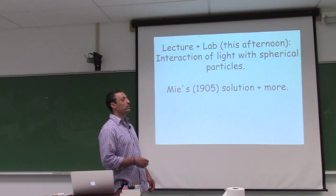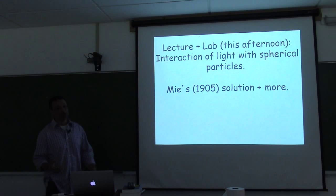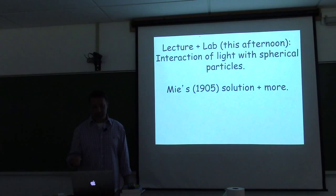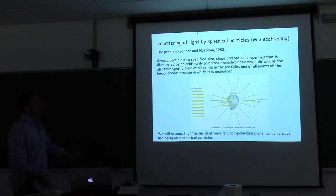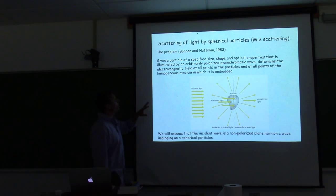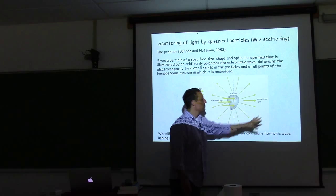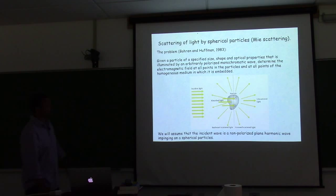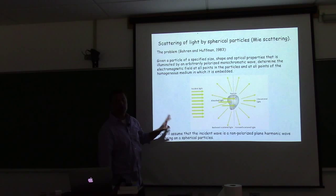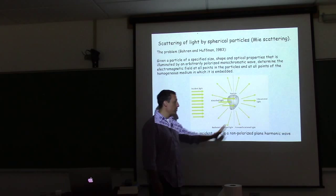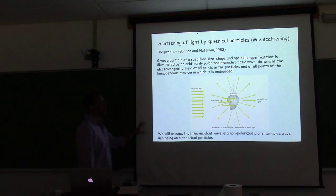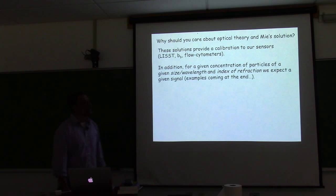Every year I wonder whether or not we should go through this painful process, and I hope to convince you that we should, but it resonates with some more than with others. The problem at hand is as follows: you have a particle with specific size, shape, and optical properties, illuminated by an arbitrarily polarized monochromatic light wave. What you need to determine is the electromagnetic field at all points outside — the scattered or absorbed light. Where does it go? For today's talk, since we're doing Mie theory, we'll assume a non-polarized plane harmonic wave and spherical particles. In principle, the same problem applies to any shape, any polarization. We will talk a little bit about polarization, but we'll assume a non-polarized incident wave.